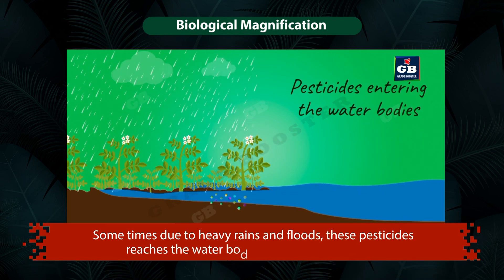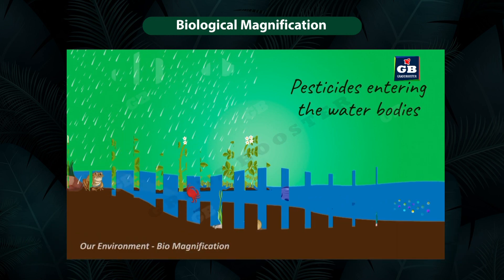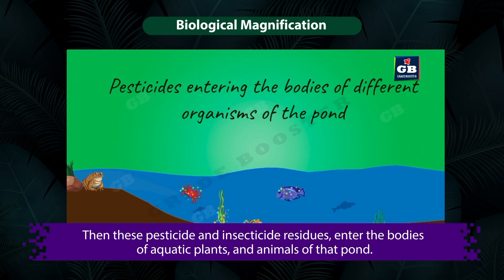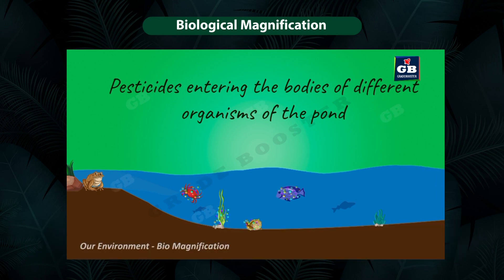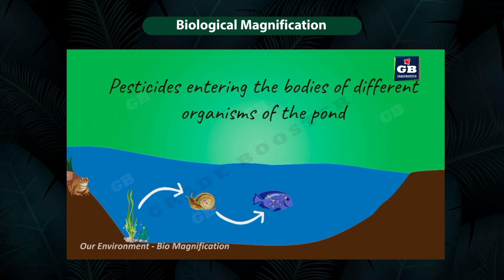Sometimes the pesticides mixed in the soil seep down and contaminate the groundwater. Sometimes, due to heavy rains and floods, these pesticides reach water bodies like ponds and rivers. Then these pesticide and insecticide residues enter the bodies of aquatic plants and animals of that pond. In this way, these chemical pesticides and insecticides enter the food chains.